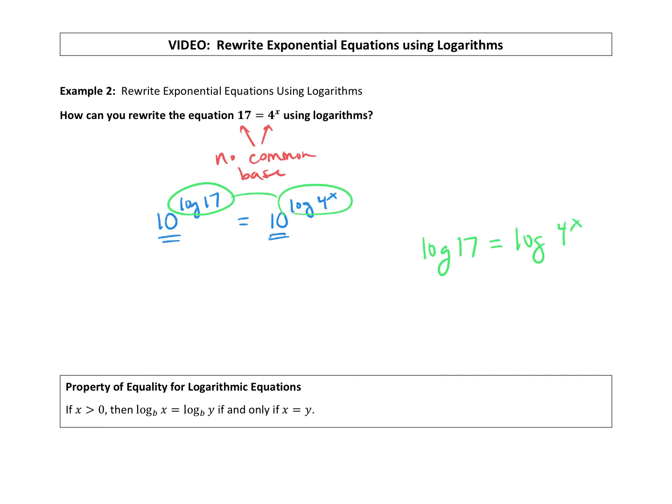So essentially if you look back at the original equation, the easiest way to solve this is finding a common base, set your exponents equal to each other. When that's not the case, this middle step right here, we can jump right to this and essentially we are taking the log of both sides of that equation. And then we can work with that.